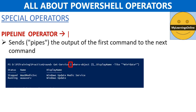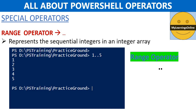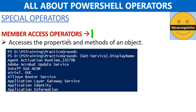Next one is the pipeline operator, which sends the output of the first command to the next command. As you can see in the screenshot, we are sending the output of the get-service command to the where-object command. The range operator represents sequential integers in an integer array given an upper and lower boundary. Beginning from PowerShell 6, the range operator works with characters as well. In the screenshot, we are getting a list of integers from 1 to 5 using the range operator. Finally, the member access operator is used to access the properties and methods of an object. In the screenshot, we are fetching the display name of a service using the member access operator.